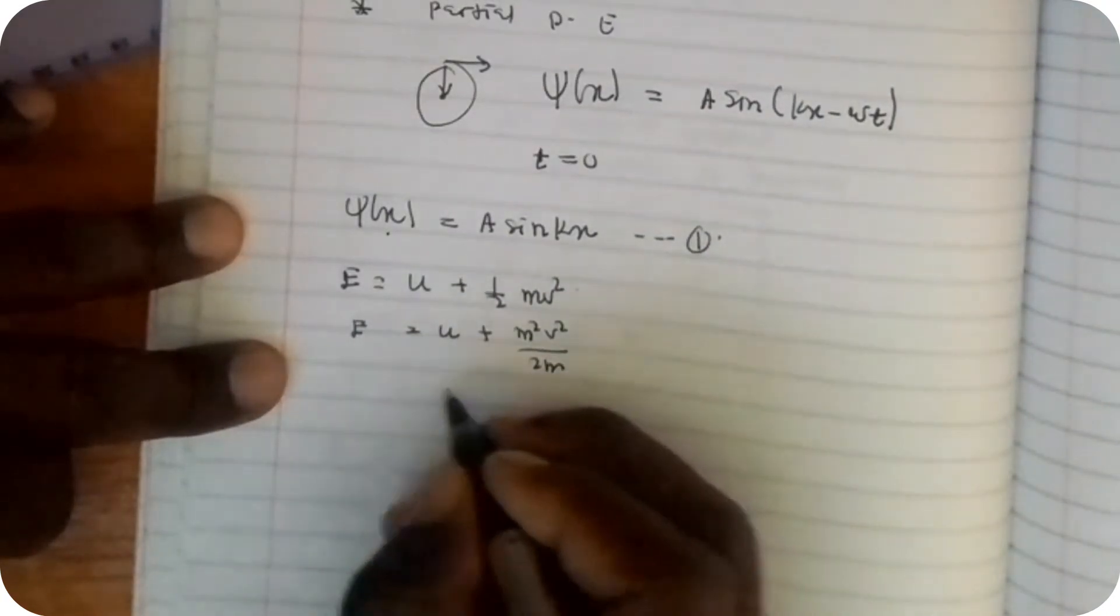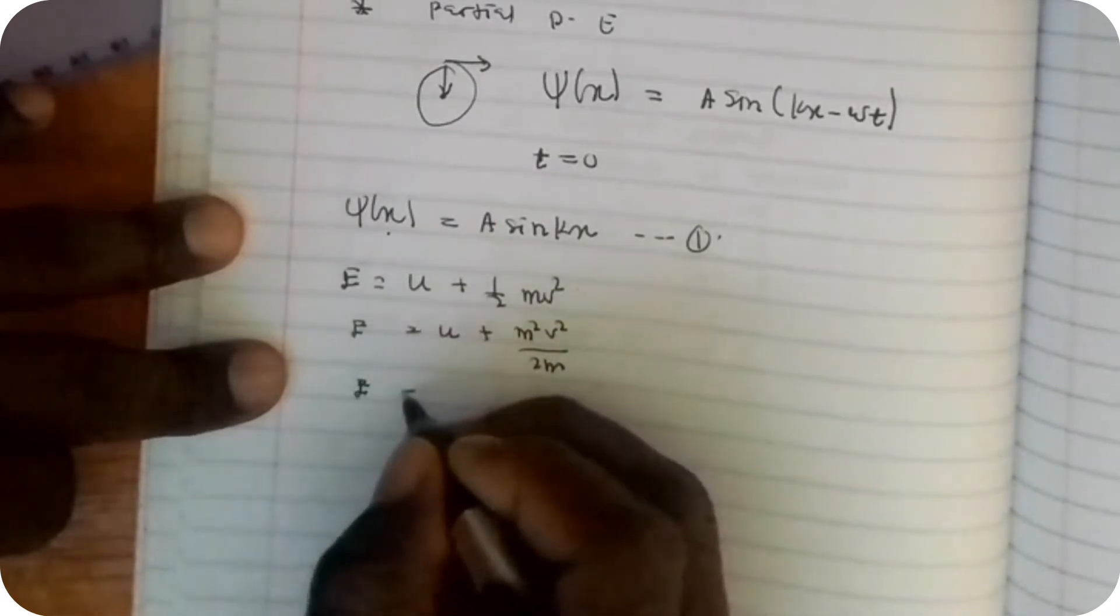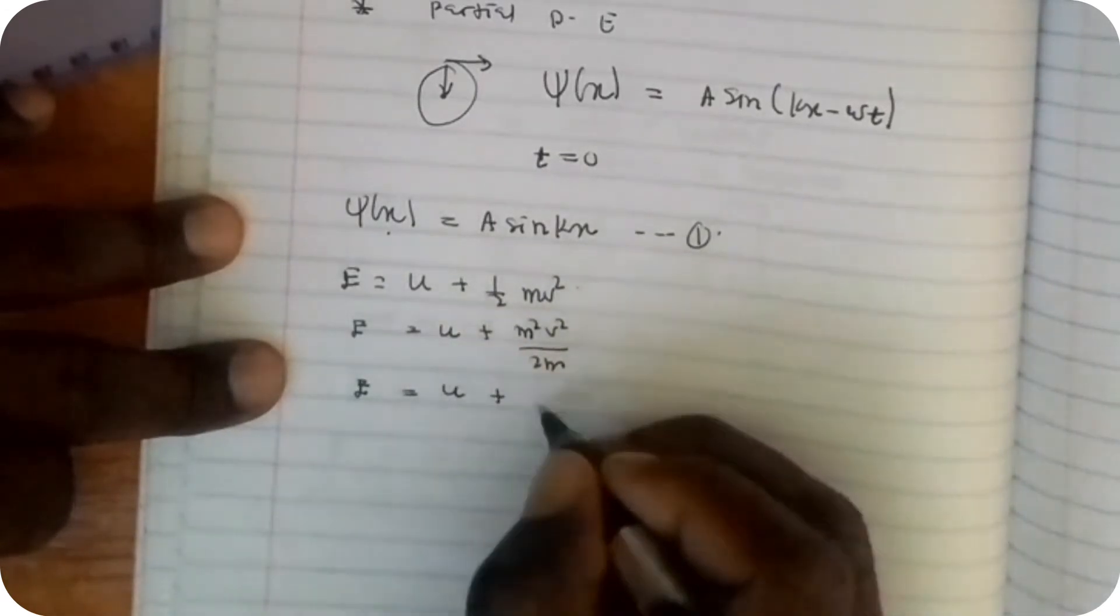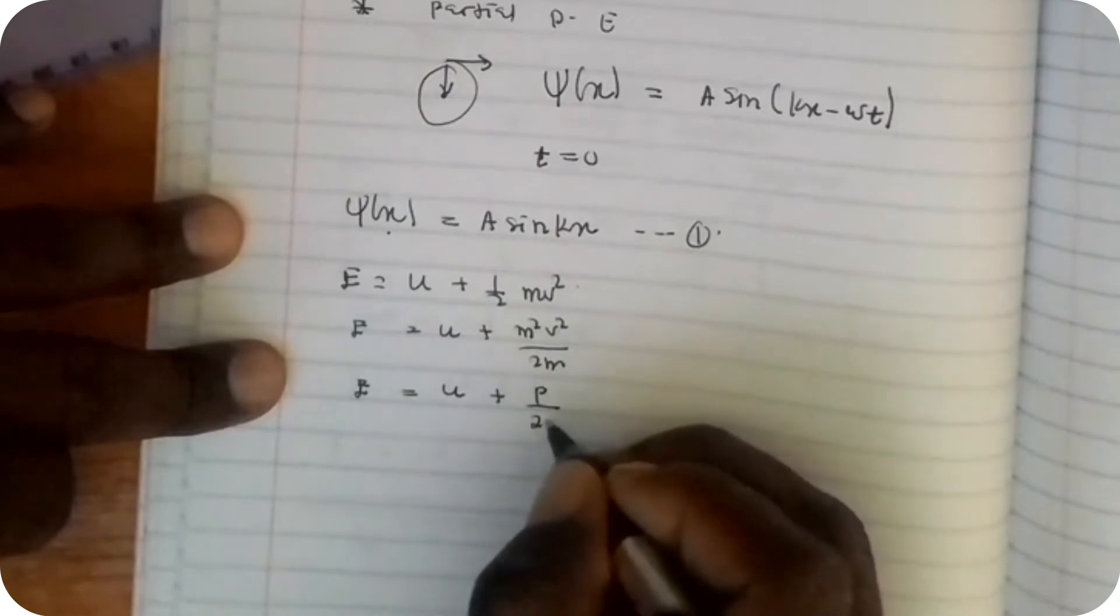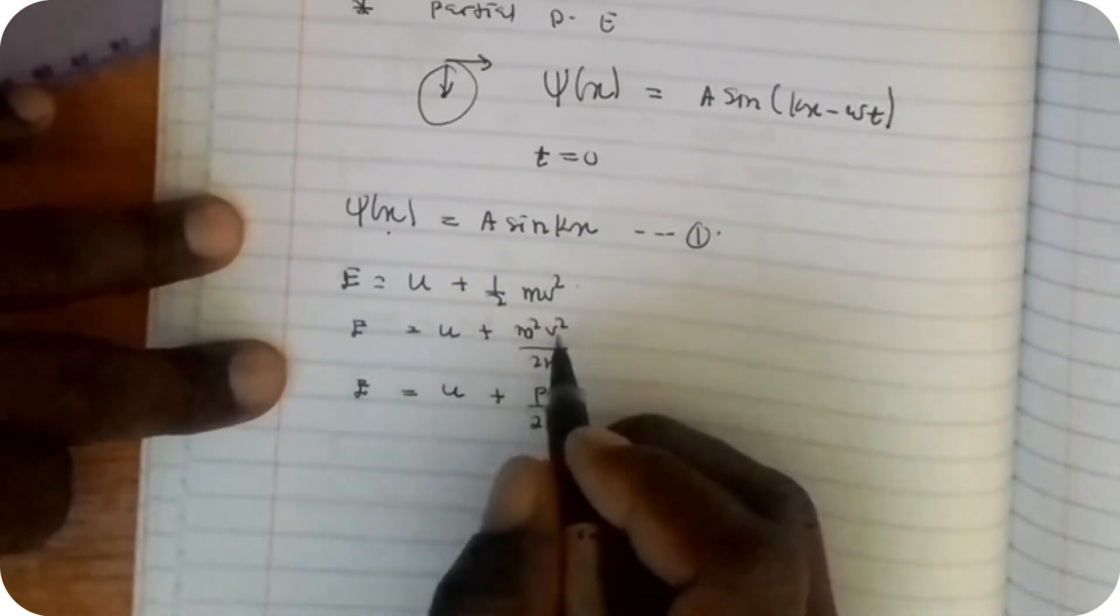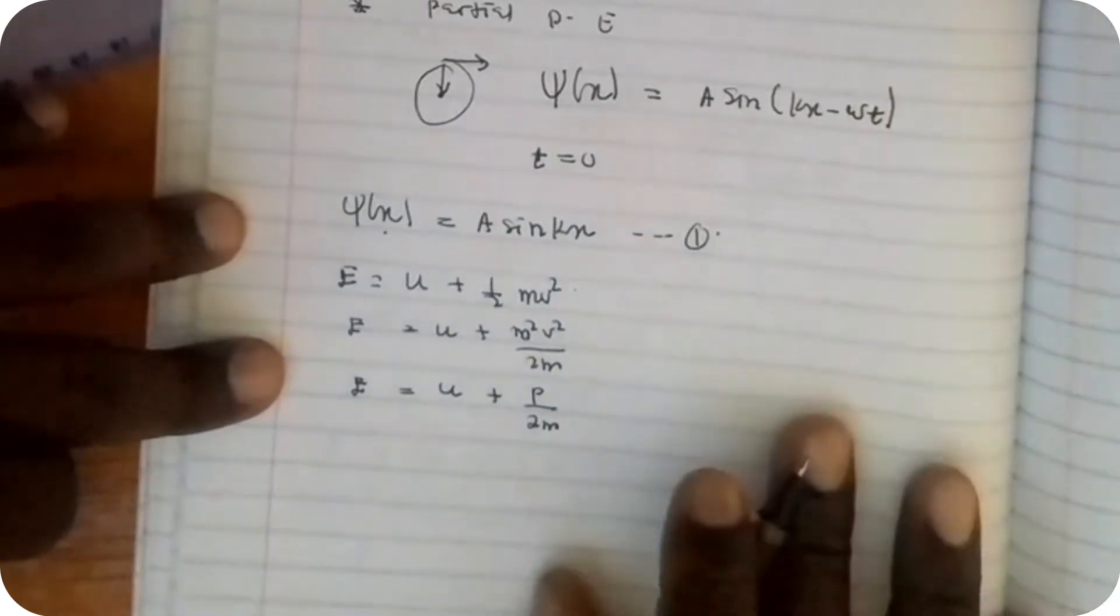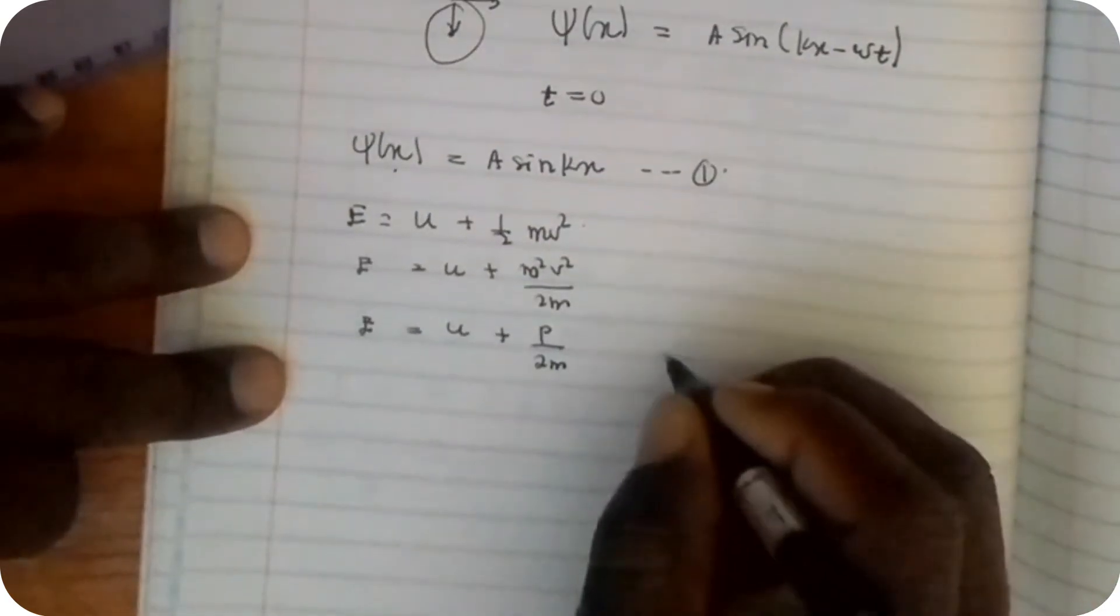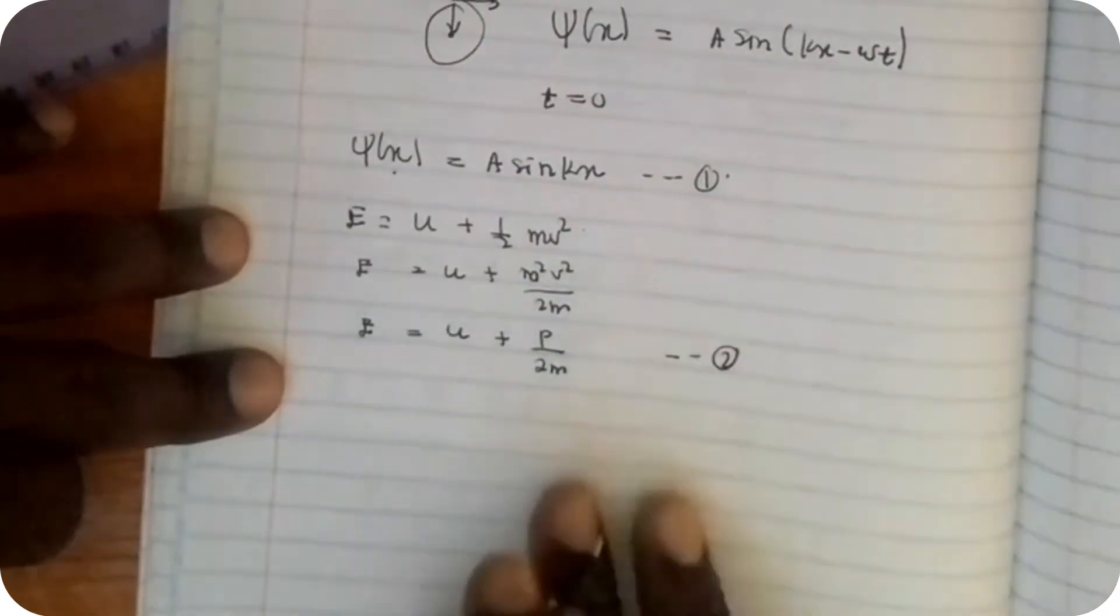It gives us E equals U plus p²/2m because momentum equals mv. So mv² equals momentum squared. This is going to be our equation number 2.